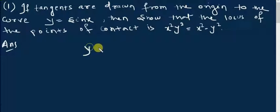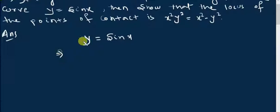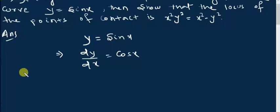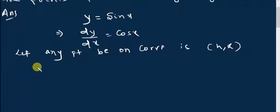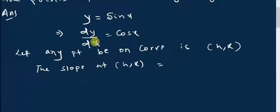Given y = sin x is our curve and we have to find the tangents from the origin. To find the tangent, we find the slope dy/dx. The derivative of sin x is cos x. Let any point on the curve be (h, k), so the slope at (h, k) will be cos h — just replace x with h.